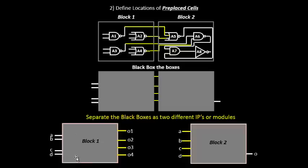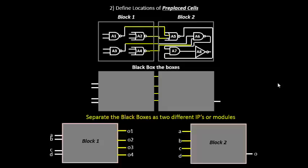The advantage of this approach is that if this block is replicated multiple times on the chip, you need not implement it multiple times. You can black-box it, give it to a user to implement separately, and then this block can be instantiated multiple times on the netlist whenever required. This is the concept of reusable modules — small modules implemented once and reused at the top level.